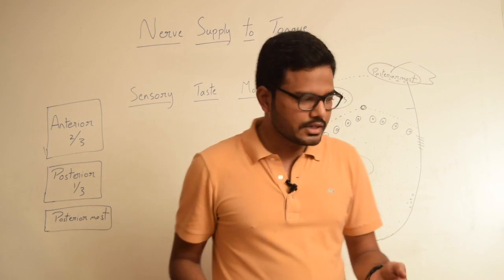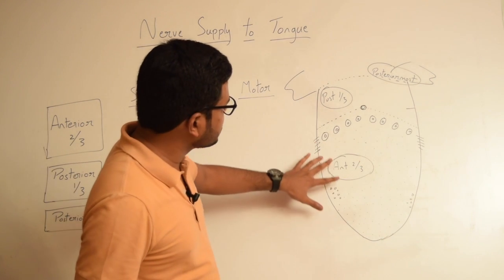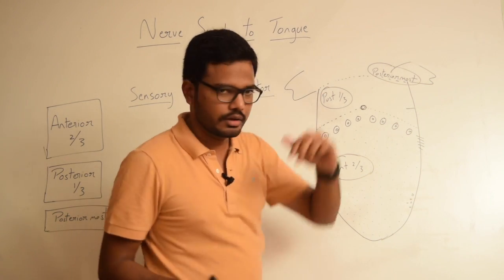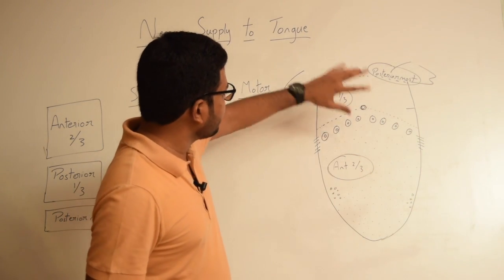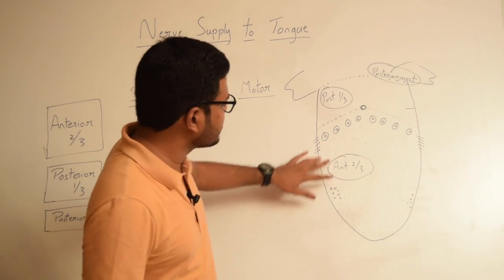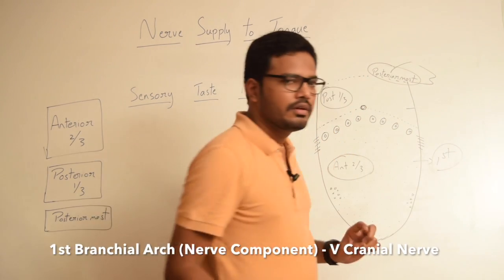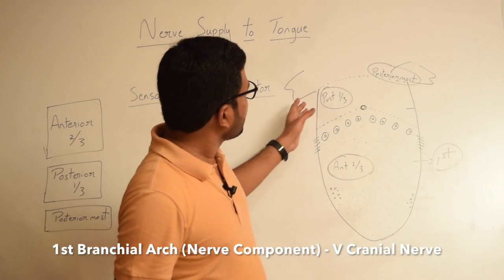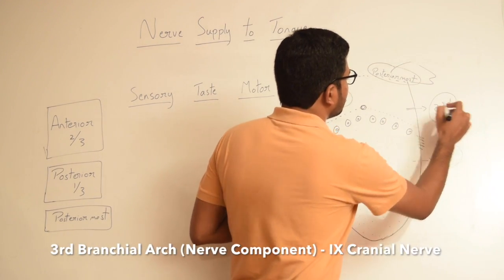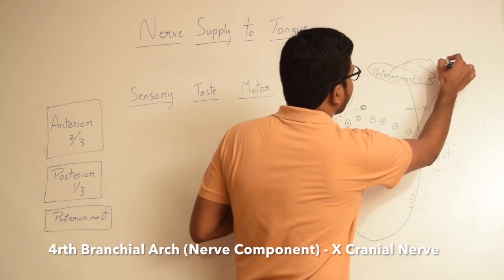Before going into the details, let's briefly look into the parts of the tongue. We have the body or anterior two-thirds of the tongue, the posterior one-third, and the posterior most part of the tongue. The epithelium covering the anterior two-thirds has its origin from the first branchial arch, whereas the epithelium covering the posterior one-third has its origin from the third branchial arch, and the posterior most from the fourth branchial arch.